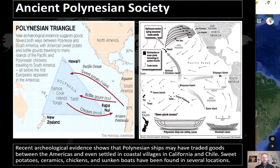One example is the Chumash word for the sewn plank canoe, 'tomolo'o,' while the Hawaiian word for useful tree is 'kumulo'o.' The Chumash tribe of Southern California is one of the few Native American tribes that built a seagoing vessel, and its construction was similar to Hawaiian canoes — planks of wood were sewn together using roots and branches that would expand when wet to close the holes. Many scholars have refused to accept that Polynesians built a trading network with America, but linguistic, DNA, and archaeological evidence is beginning to show that these people were far more advanced than previously thought.